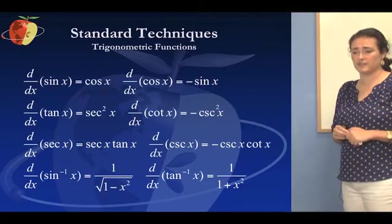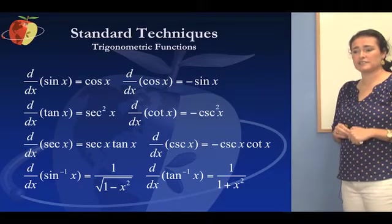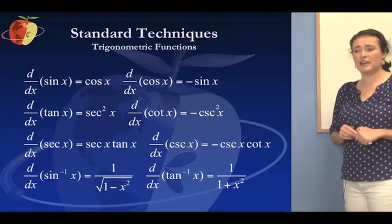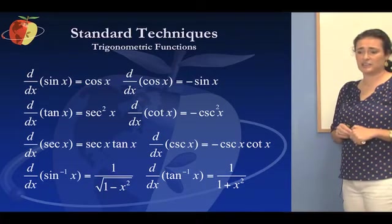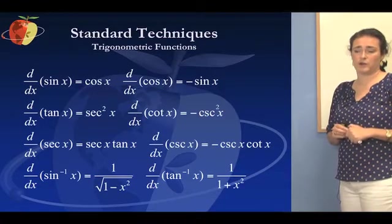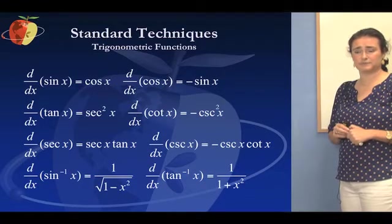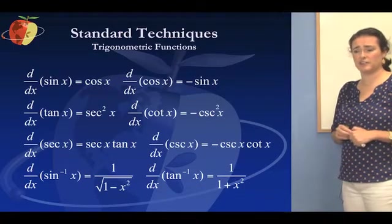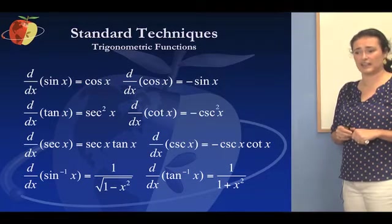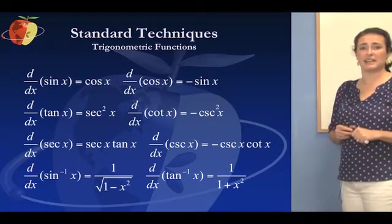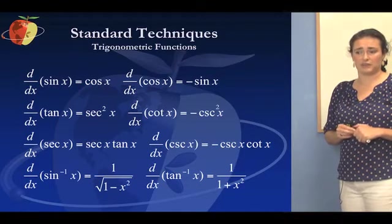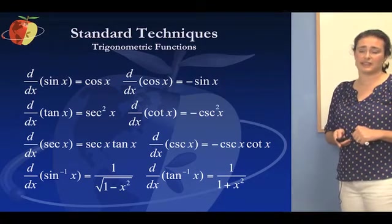Now, moving on, there's trigonometric derivatives as well. So on your screen, you'll see that derivative of sine is cosine. Derivative of tangent is secant squared. Derivative of secant is secant x tangent x. The derivative of sin⁻¹(x) is 1 over the square root of 1 - x². Down the right-hand column, the derivative of cosine x is negative sine x. Derivative of cotangent x is negative cosecant x. Derivative of cosecant x is negative cosecant x cotangent x. And the derivative of tan⁻¹ would be 1 over 1 + x².